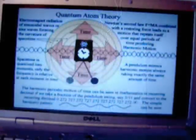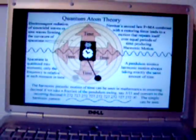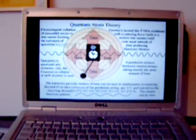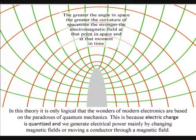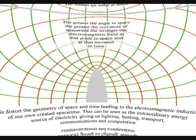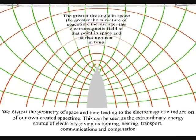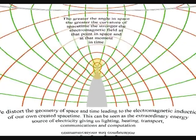In this theory, it is only logical that the wonders of modern electronics are based on the paradoxes of quantum mechanics. This is because electric charge is quantized and we generate electric power mainly by changing magnetic fields or moving a conductor through a magnetic field.